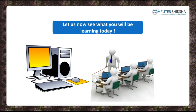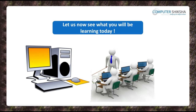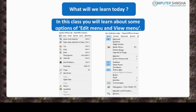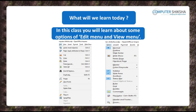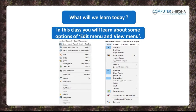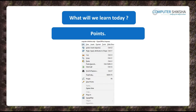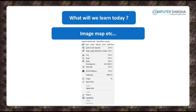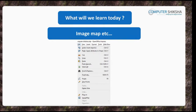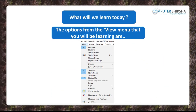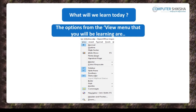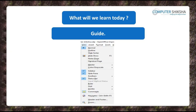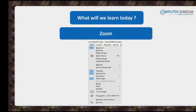Let us now see what we are going to learn in today's class. In today's class, you will learn about the remaining options of the Edit and View Menus like Points, Glue Points, Field, Links, Image Map, etc., which are all options of the Edit Menu. The options from the View Menu that you will be learning about are Guide, Comments, Navigator, and Zoom.